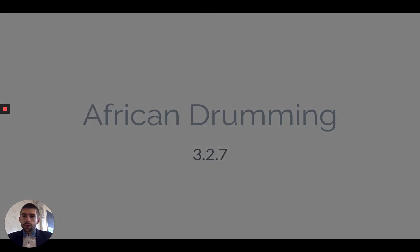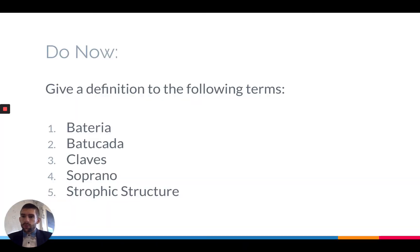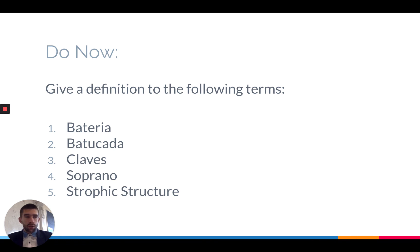Before we start, we'll go to the do now. So five terms to give a definition to, please, in the assignments section on the form. Number one, batteria. Number two, batacada. Number three, claves. Number four, soprano. And number five, strophic structure.